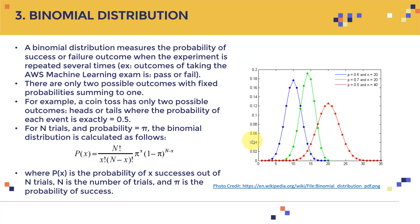The third distribution is the binomial distribution. A binomial distribution measures the probability of success or failure outcomes when an experiment is repeated several times. For example, taking the AWS machine learning exam has only two outcomes: pass or fail. Similarly, a coin toss has only two outcomes — heads or tails — so the probability of each event is 0.5.